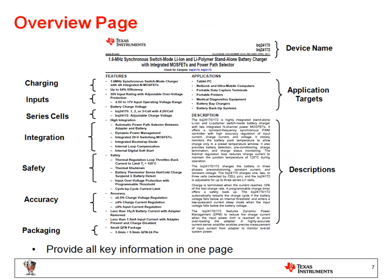The first page of the data sheet offers the overview for all key features, suitable applications and brief descriptions. Here is the device name, what is the charging performance like the charging current efficiency, what is the input voltage, how many batteries in series this charger can handle, whether it is an integrated solution or just a discrete controller, what is the safety feature, the accuracy and the packaging information, and what is the application target. There is a short description about these key features.